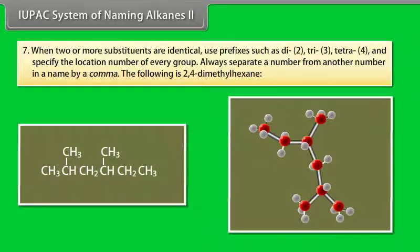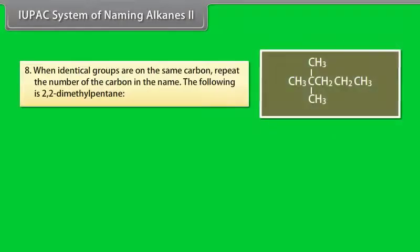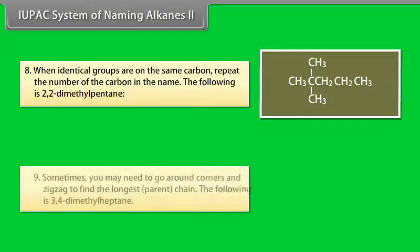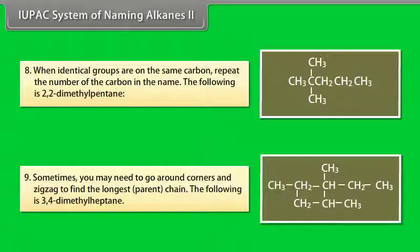Number 7, when two or more substituents are identical, use prefixes such as di for 2, tri for 3, tetra for 4 and specify the location of every group. Always separate a number from another number in a name by a comma. The following is 2,4-dimethylhexane. Number 8, when identical groups are on the same carbon, repeat the number of the carbon in the name. The following is 2,2-dimethylhexane. Number 9, sometimes you may need to go around corners and zigzag to find the longest parent chain. The following is 3,4-dimethylhexane.